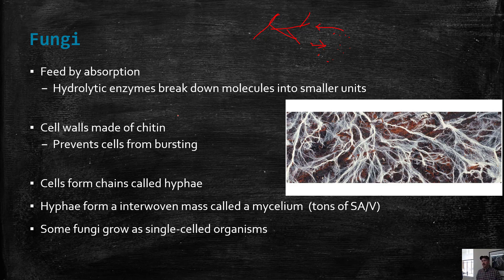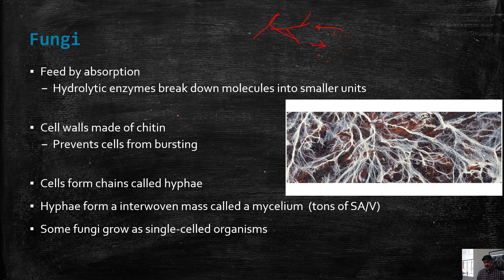What makes fungi unique is they have cell walls — just like bacteria and plants do — but their cell walls are made of chitin, which prevents them from bursting in hypotonic environments. Chitin is also found in the exoskeleton of arthropods like insects. Their cells form long chains called hyphae, which are interwoven into a mass. Each strand is a hypha, but the big mass of hyphae is called a mycelium — that's the body of a fungus, with a very high surface area to volume ratio.